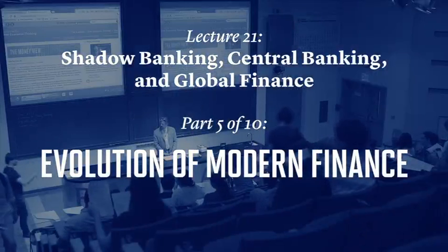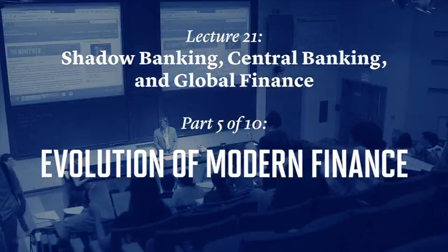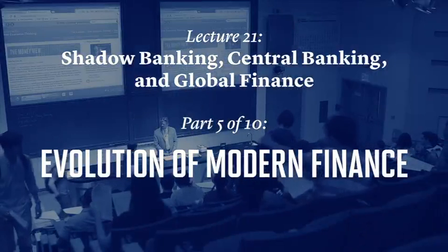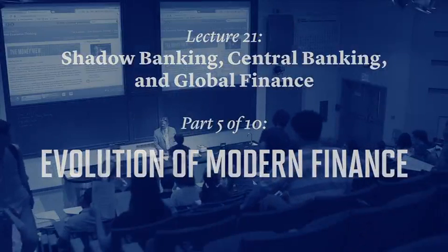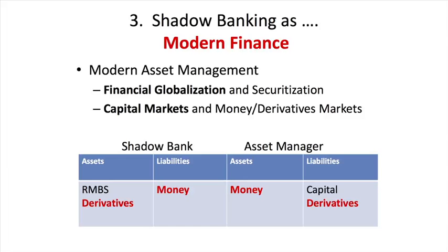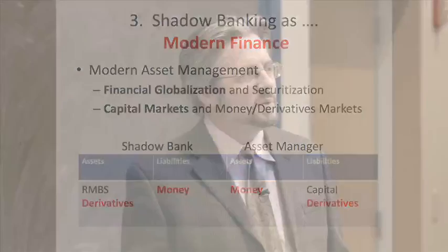Now we're going to talk about the risk transfer system. Shadow banking was taking advantage of some developments that are really relatively recent, that come from modern finance. Securitization is one. Securitization came with financial globalization.